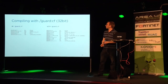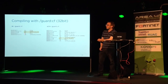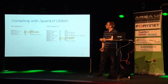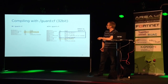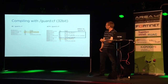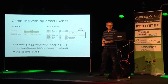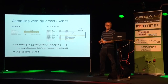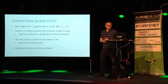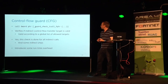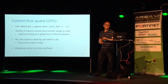CFG restricts indirect calls and indirect jumps to a static global set of valid functions — valid targets which are functions. In code, here's a 32-bit indirect function call without guard versus with guard — you see additional overhead code including a check function that checks the indirect call target to verify it's in the set of valid targets. 64-bit is basically the same. This introduces some runtime and memory overhead.